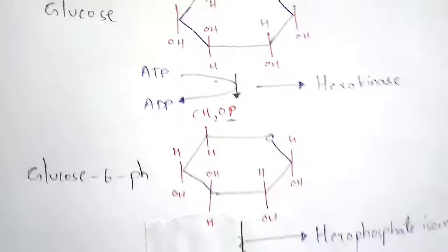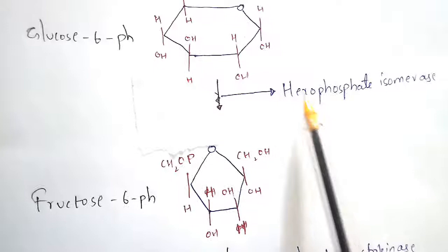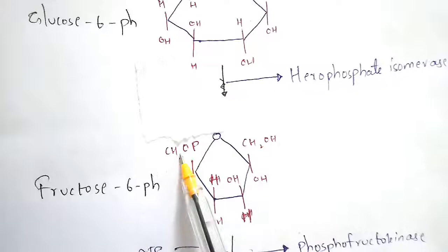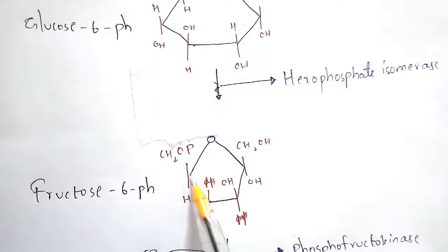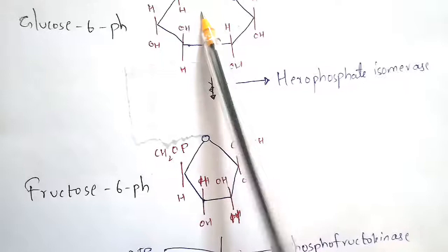Glucose-6-phosphate will get converted to fructose-6-phosphate by the enzyme hexophosphate isomerase. The cyclic structure of fructose normally consists of an OH group at the first carbon and at the sixth carbon. But in fructose-6-phosphate, the name itself indicates that at the sixth carbon there is a presence of a phosphate group instead.